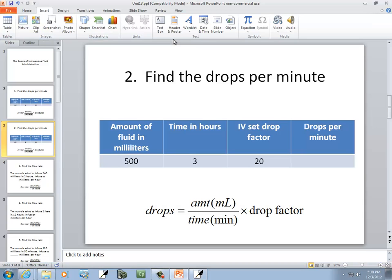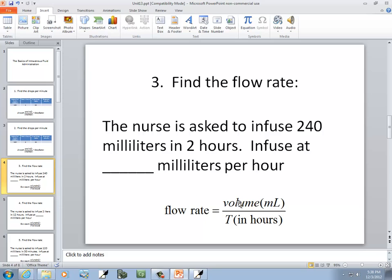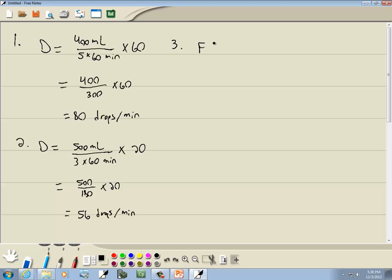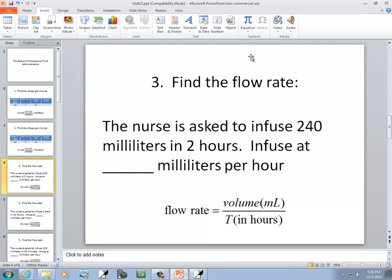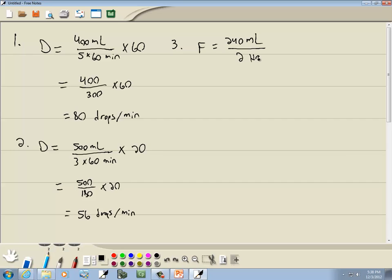Our third problem, we're wanting to find the flow rate. The flow rate is volume in milliliters over time in hours. The nurse is asked to infuse 240 milliliters, so our flow rate is 240 milliliters over time in hours. It says 2 hours, so we've got 2 hours. 240 divided by 2 gives us 120 milliliters per hour.